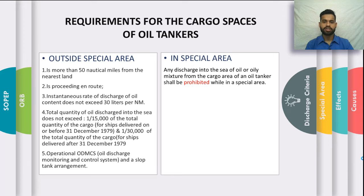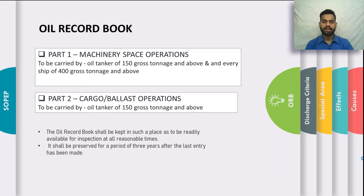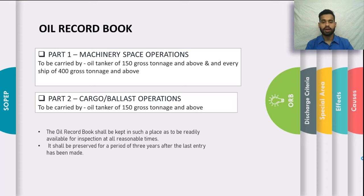The Oil Record Book is in two parts. Part 1 covers machinery space operations and must be carried by oil tankers of 150 gross tonnage and above and every ship of 400 gross tonnage and above. Part 2 covers cargo and ballast operations and must be carried by all oil tankers of 150 gross tonnage and above. The ORB must be readily available for inspection at all reasonable times and preserved for three years after the last entry, and is checked by port state control to verify compliance with Annex 1.